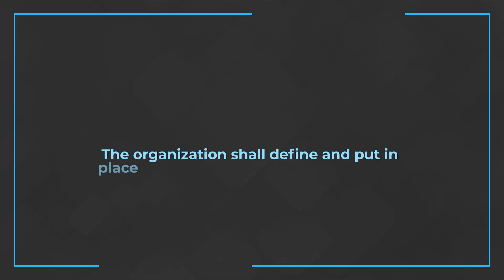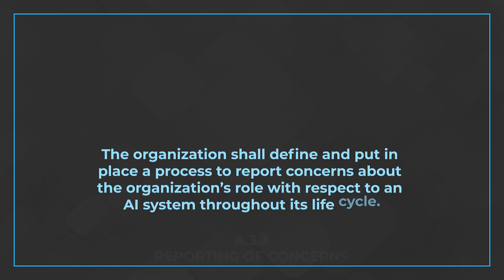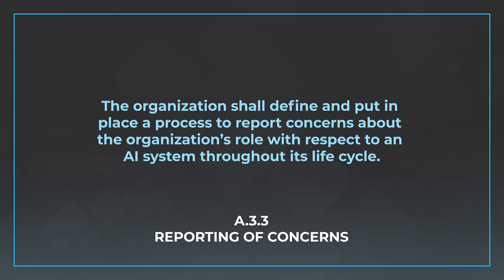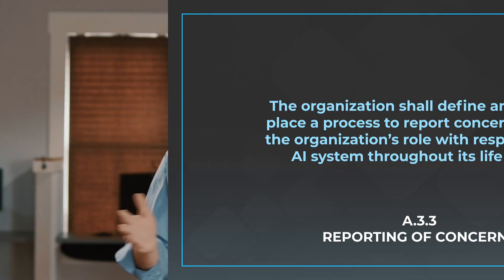The next control is A.6.3.3, reporting of concerns. This is also very important because you need to ensure that there are mechanisms in place for people to report concerns around the use of AI. The control states: the organization shall define and put in place a process to report concerns about the organization's role with respect to AI systems throughout its lifecycle.